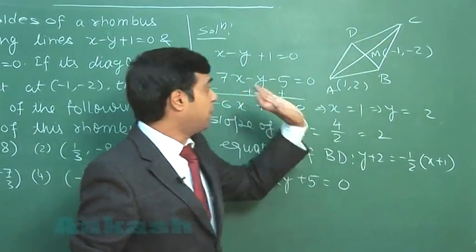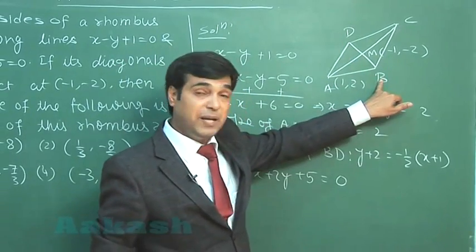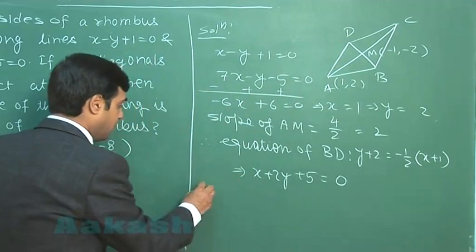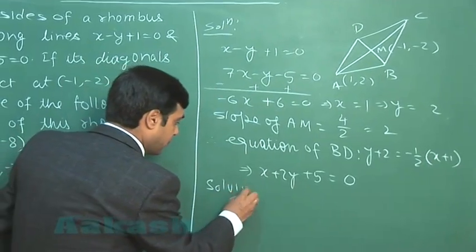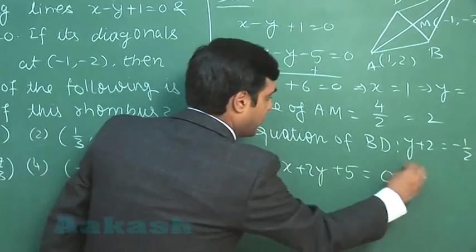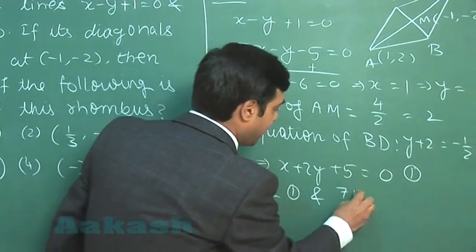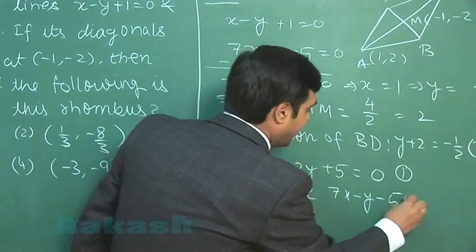Now the other diagonal may be BC or D. So if I solve this BD with AB or AD, I will be getting the other vertices. Solving, say this is equation 1, and let us say 7x minus y minus 5 equals 0 is the other equation.